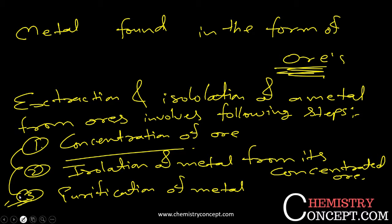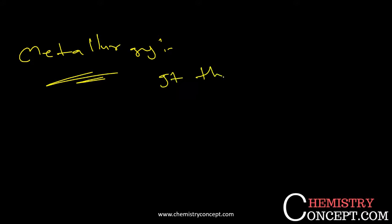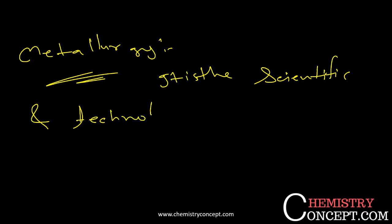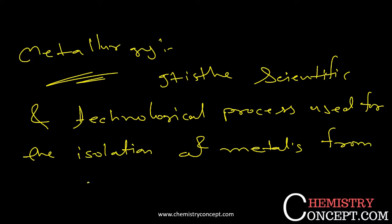To get the metal, the starting material is the ore. Now I will tell you what is metallurgy. Metallurgy is the scientific and technological process used for the isolation of metals from the ore. So whatever method is used to extract or isolate metals from the ore is known as metallurgy.